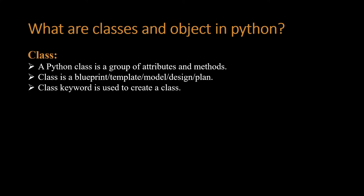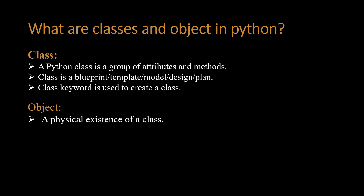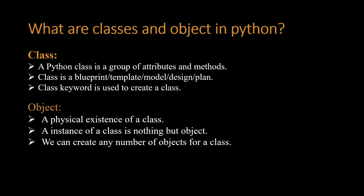An object is a physical existence of a class — an instance of a class is nothing but an object. We can create any number of objects for a class. Let's see one example: suppose this one is a home and we create one blueprint.